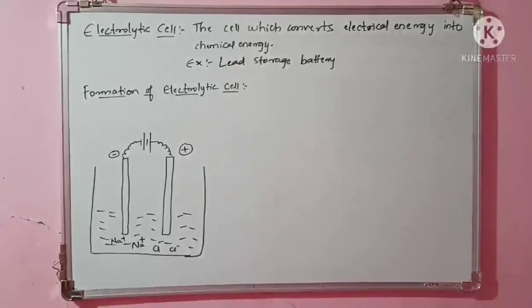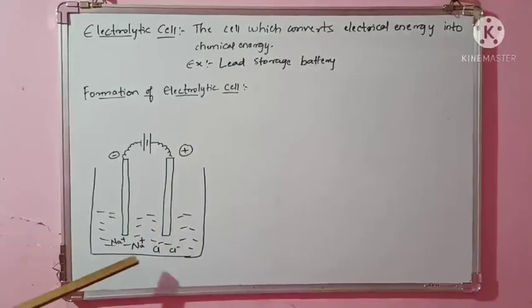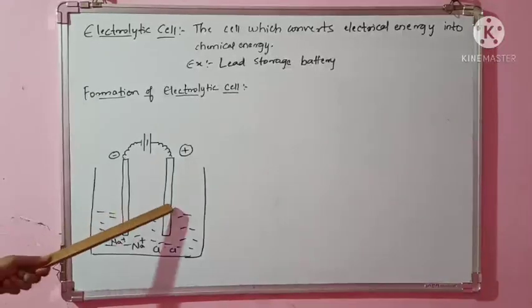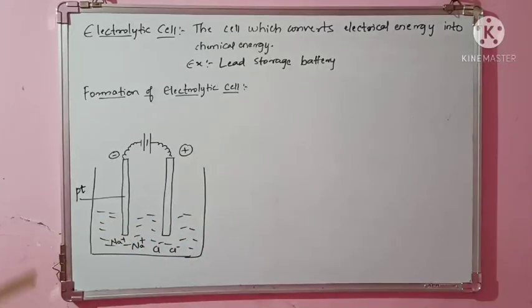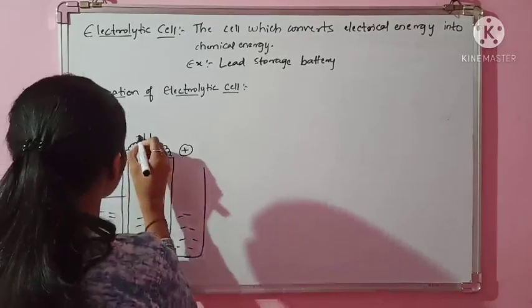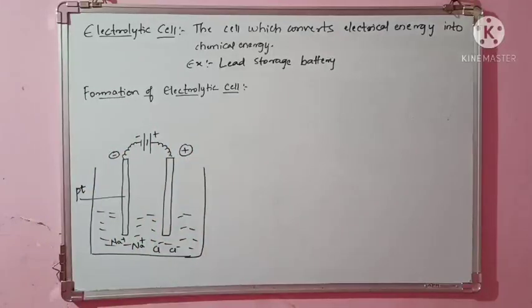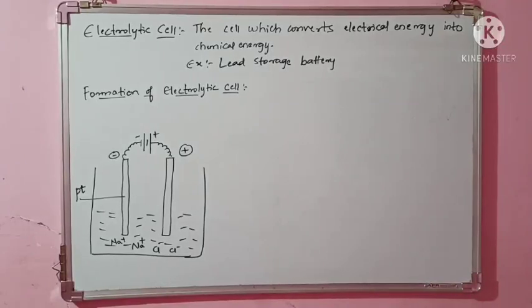Here I have drawn the electrolytic cell. I have taken a dilute solution of NaCl in a container. There are two electrodes made up of platinum — both electrodes are platinum (Pt) — and both are immersed in the NaCl solution. These two electrodes are connected to a battery, where the small line indicates the negative terminal and the capital line indicates the positive terminal.